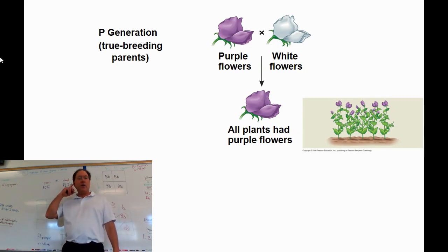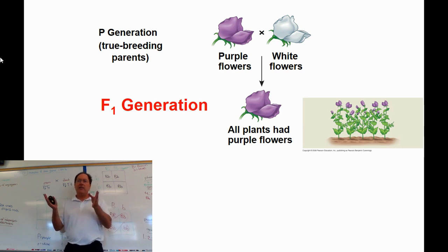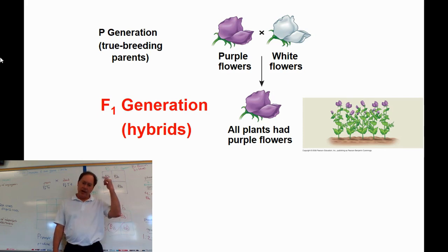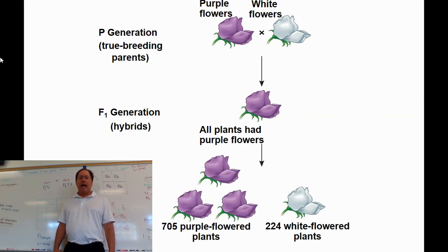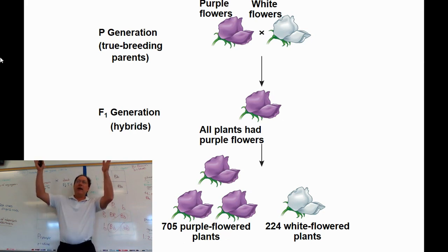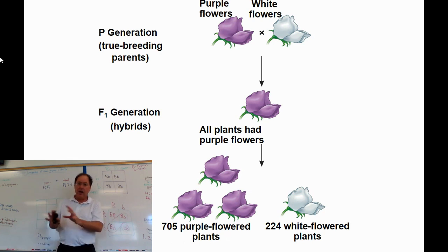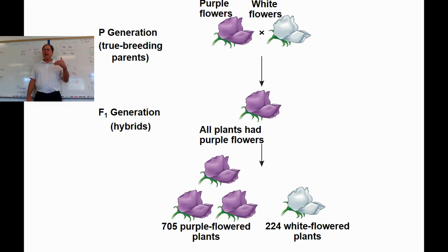What would you predict he would find? At first I'd say maybe a light purple — you're diluting the purple color by mixing it with white. But what he found, in the F1 generation — the first filial generation — was that all the plants had purple flowers. He scratched his head: 'Wait, did I do this right? I made a hybrid here and it's all purple.' All the hybrid offspring of the P generation were called the F1 generation, and all had purple flowers.